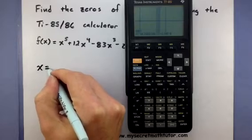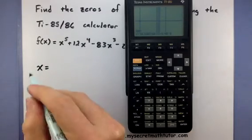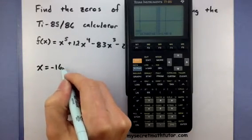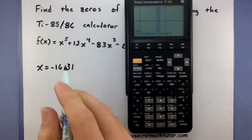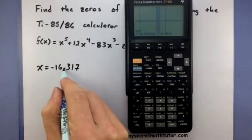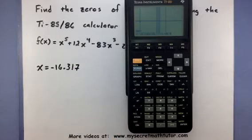Alright. So it says it found one of our first roots at negative 16.317. So that's one of the zeros of our function.